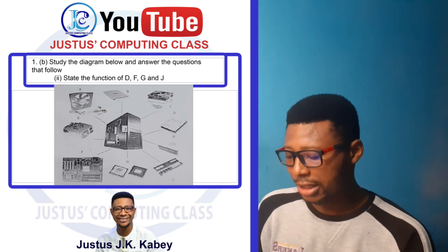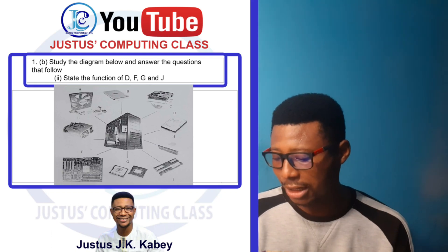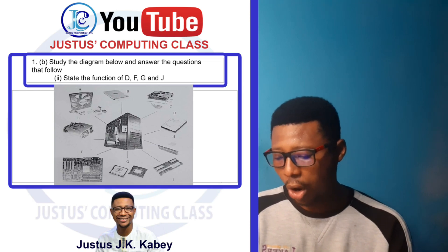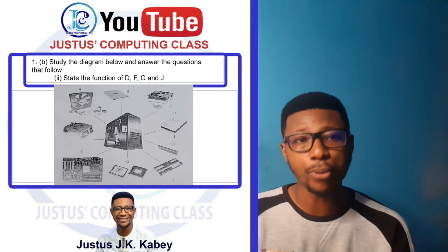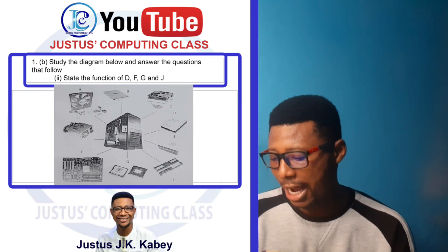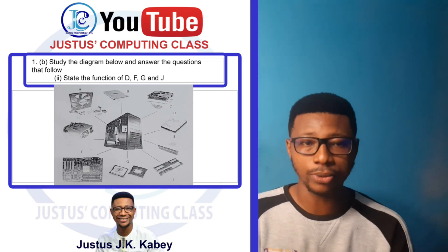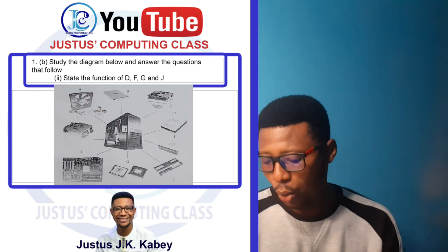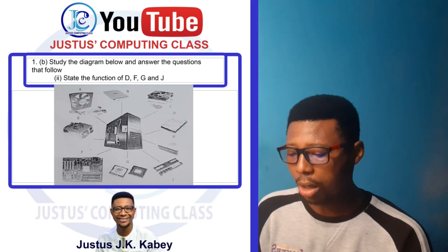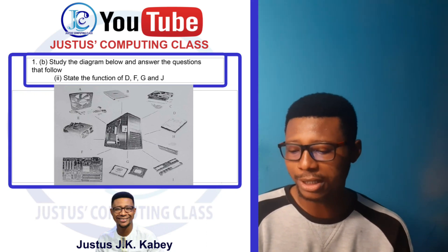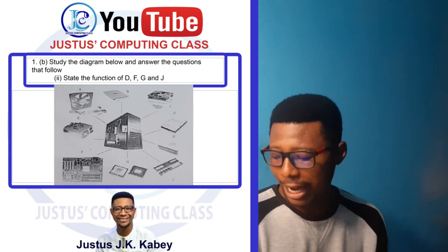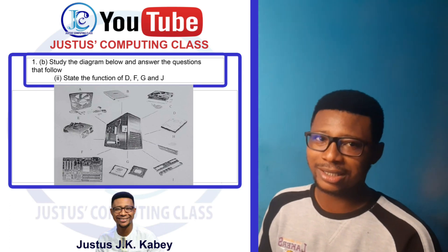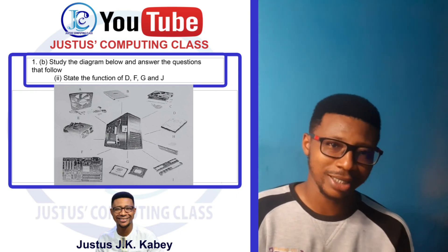Part label J is the system unit. The system unit is the hardware device which contains all the major processing and storage components.